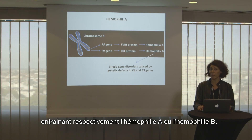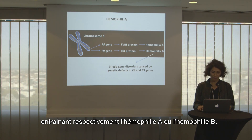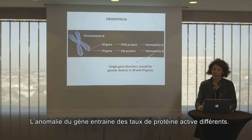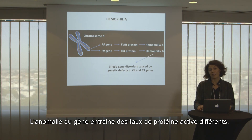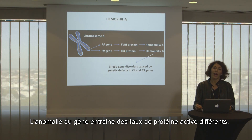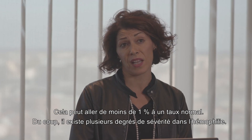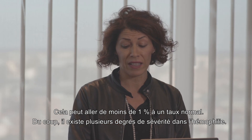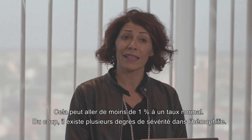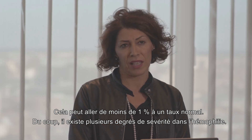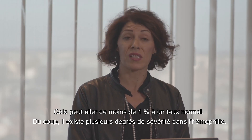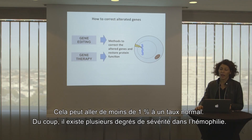If the genes coding for factor VIII in Hemophilia A and factor IX in Hemophilia B have abnormal function, the type of abnormality affects the level of active protein produced — which can range from less than 1% up to the normal level. This creates the different classifications of hemophilia severity.